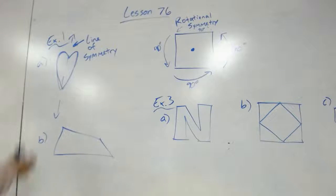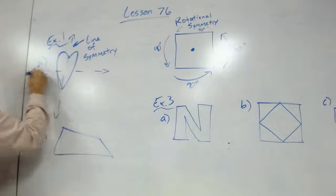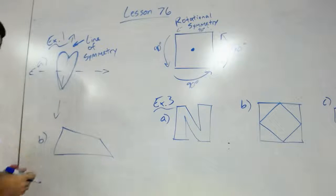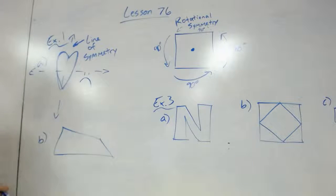So a heart, it only has one line of symmetry. If I reflected that, or folded an imaginary piece of paper there, top and bottom, that would not work. So that would not be a line of symmetry. This only has one line of symmetry.